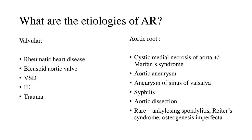Under aortic root causes: cystic medial necrosis of the aorta, in which the elastic tissue of the aortic wall gets affected, may or may not be associated with clinically obvious Marfan syndrome. Then there is aortic aneurysm due to atherosclerosis or cystic medial necrosis. An aneurysm of the sinus of Valsalva can also affect coaptation of the aortic valve. Syphilis is a rare cause these days, and aortic dissection by various mechanisms can also lead to aortic regurgitation.